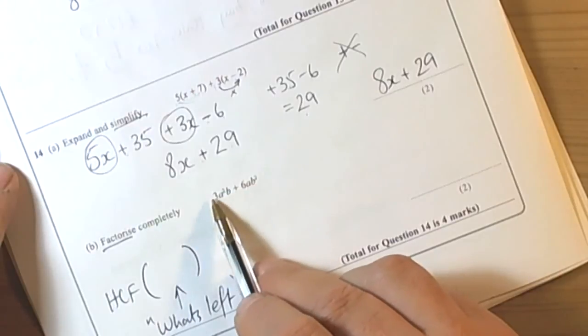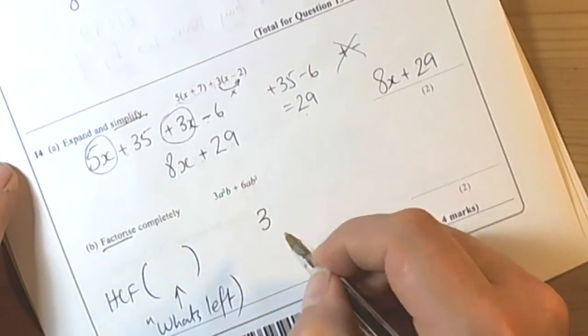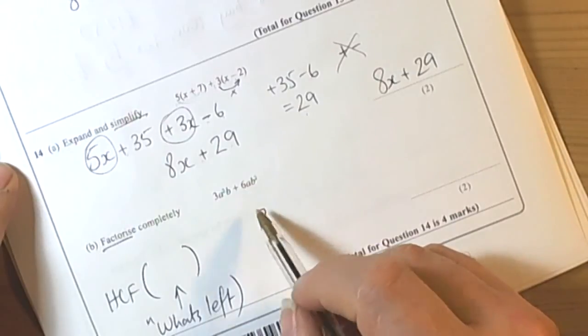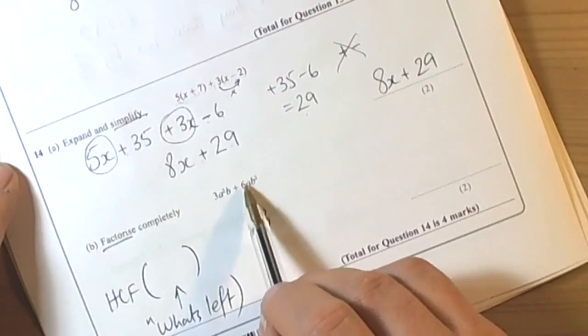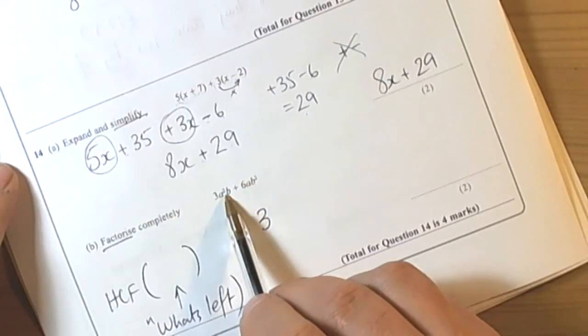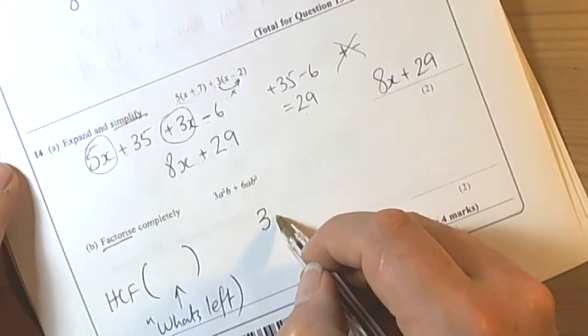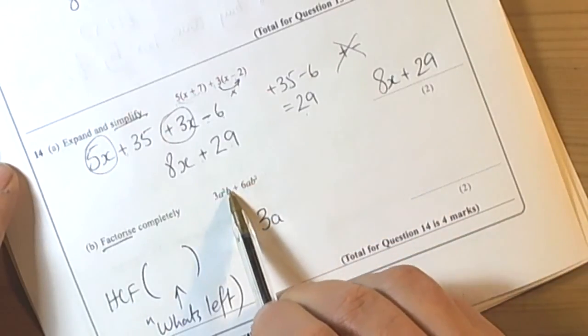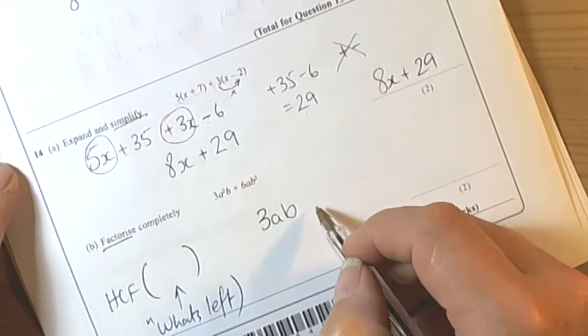So let's have a look at the terms and see what's the highest common factor. We've got 3 and 6, so 3 will go into 3 and 3 will go into 6, so 3 will be the highest common factor of the numbers. But then we've got to be careful because we've got to look at the letters and see if there's any common factors here. Well there's an a² and an a, both of those will divide by a so a will be a factor. And then there's a b and a b² and both of those will divide by b, so there's a b factor as well.